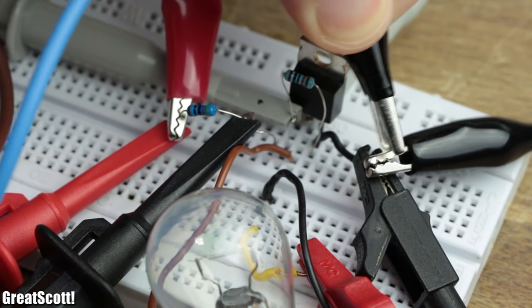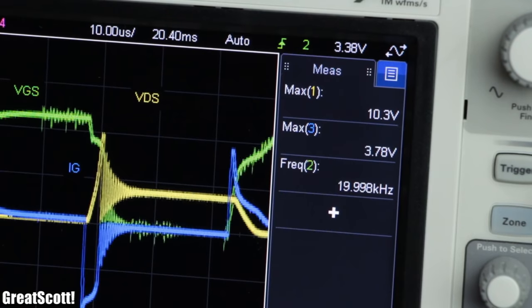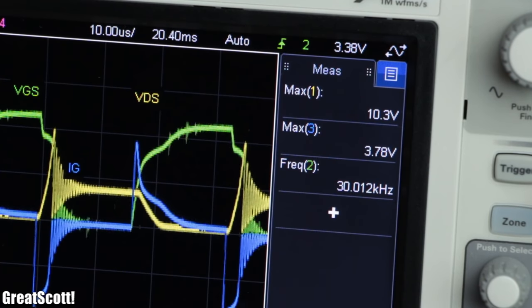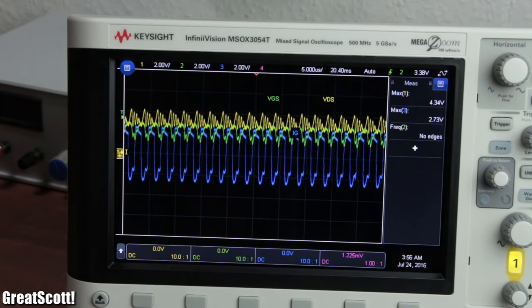This problem of rise/fall time becomes even more complex with higher frequencies, which require way higher gate current to switch the MOSFET on and off fast enough. Otherwise, the results might look like this.